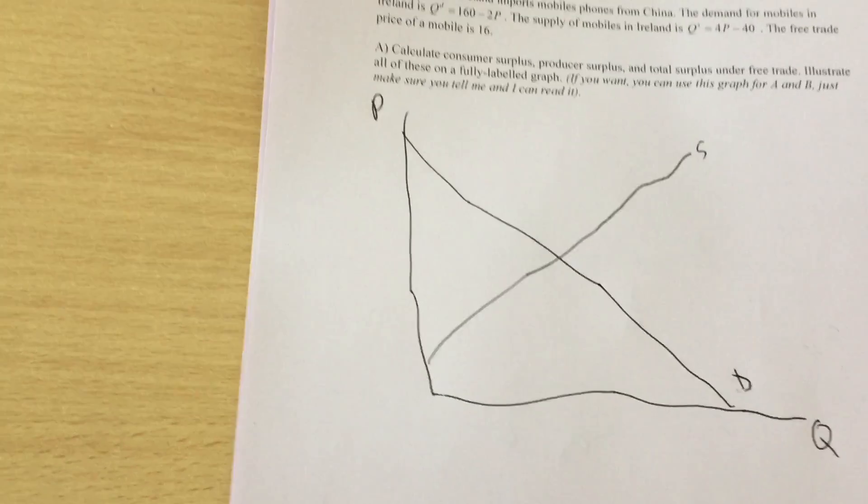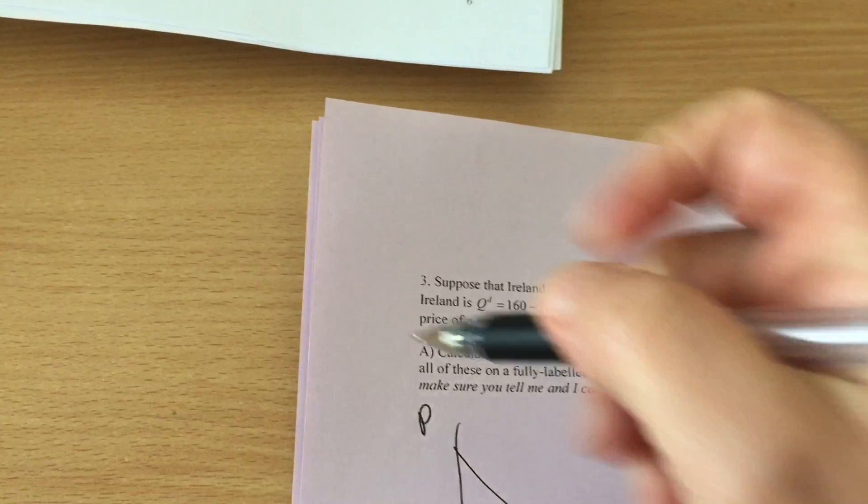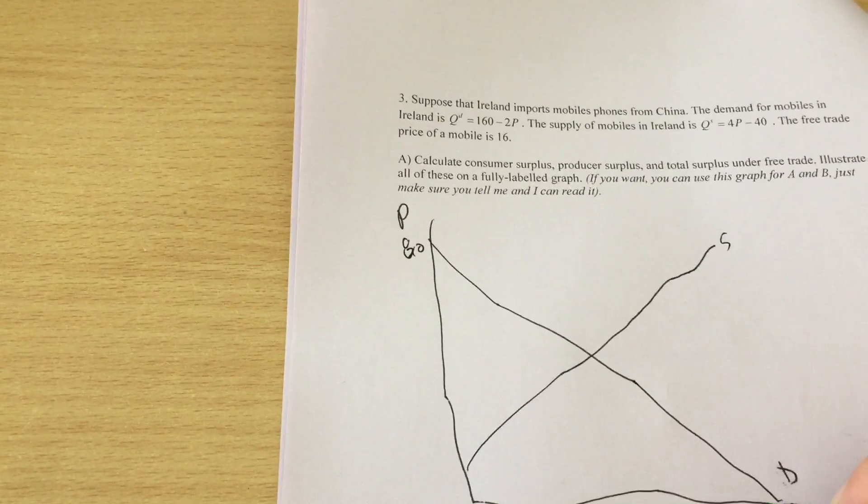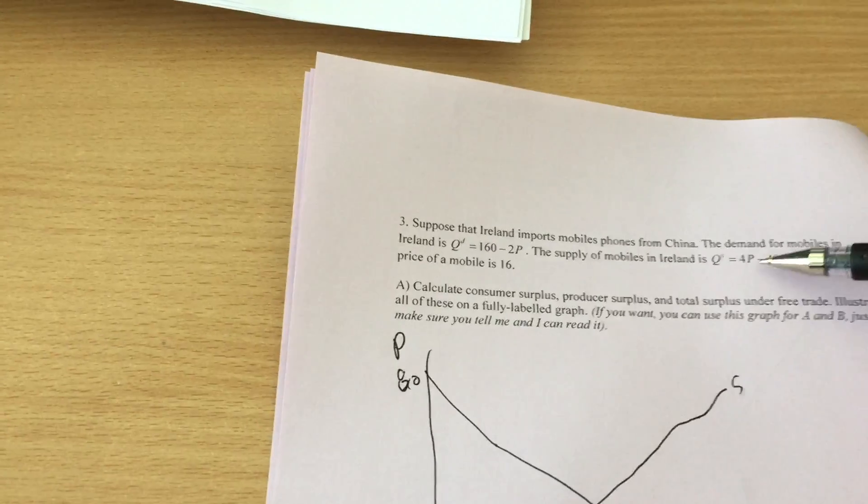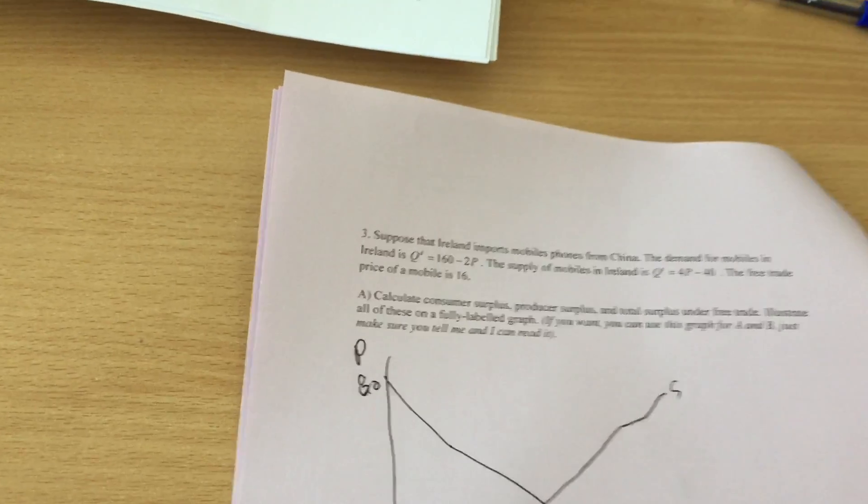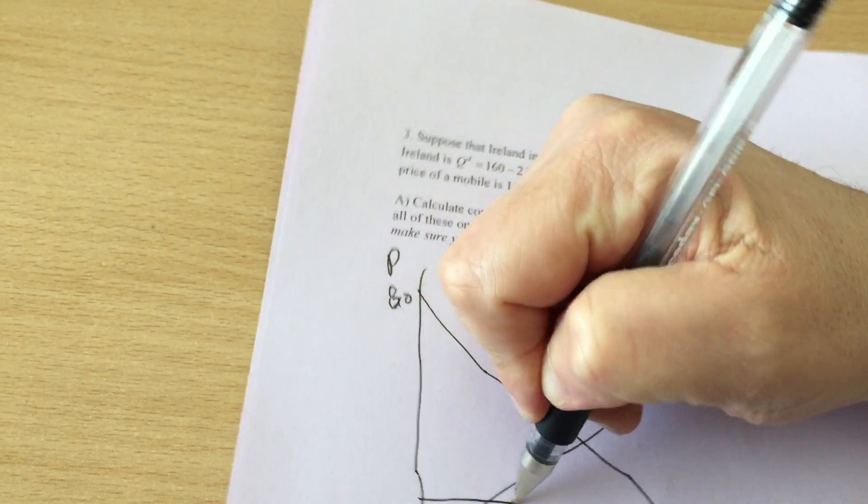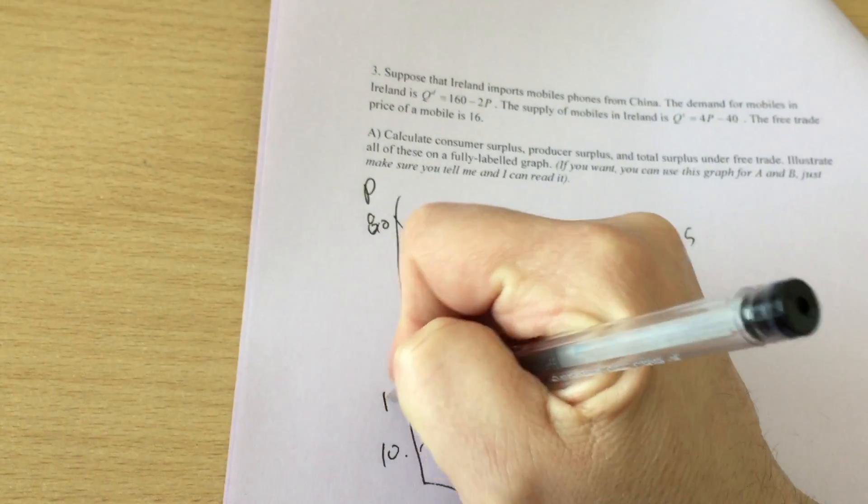So where's the demand curve start? Well when the price is 80 we don't buy any. When the price is zero we buy 160. Supply curve starts at 10. So it's the same as in the other exam except now we start off with a free trade price of 16.